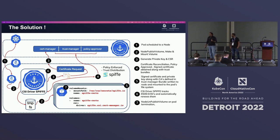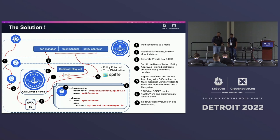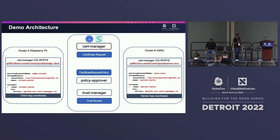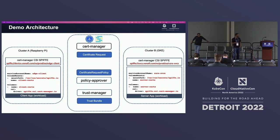Now I'll hand it off to Riaz to talk about the demo architecture. He's got Raspberry Pis here to walk through the architecture. For the demo, we have a cluster running on K3S — a two-node cluster running on Raspberry Pi — where all your edge workloads will be running. We also have a six-node GKE cluster running in the cloud. All the components Sitaram talked about — CertManager, CSI SPIFFE driver, Policy Approver, and TrustManager — are installed in both the edge and GKE clusters.